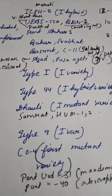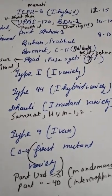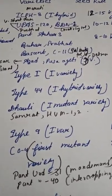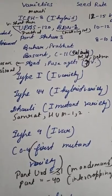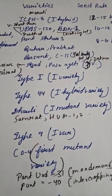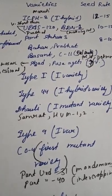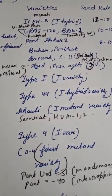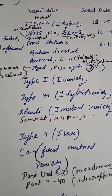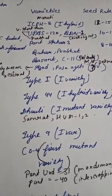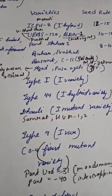The first variety of moong is Type 1, and Type 44 is the first hybrid variety. The first mutant variety is Dholi. Samrat is also a variety of moong — don't confuse it with Pant Samrat, which is a variety of brinjal.